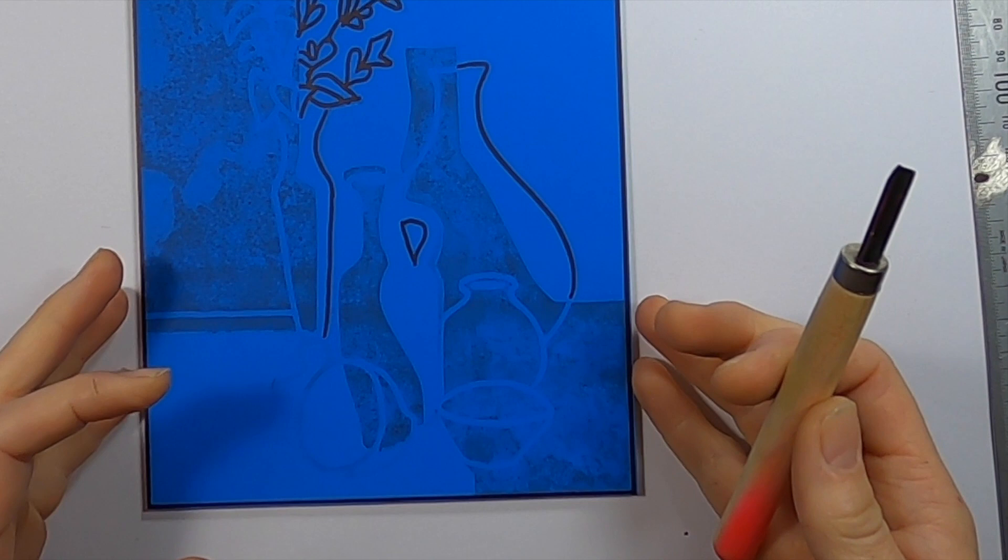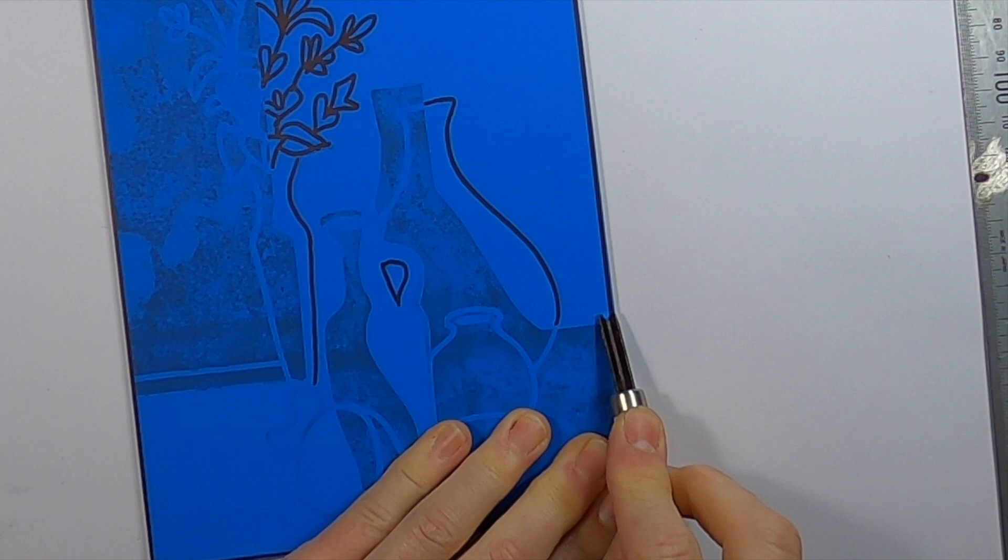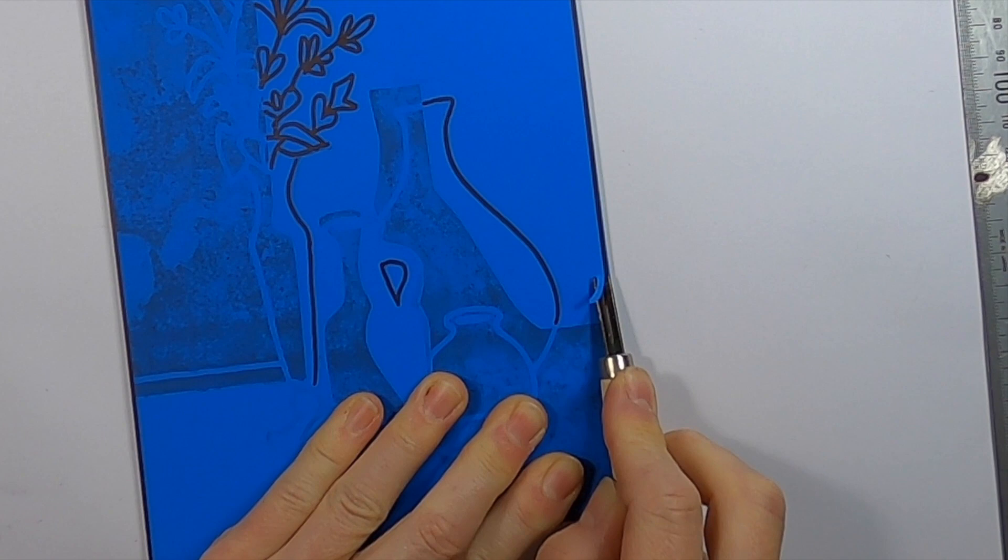As this will be a single color lino print, I'm basically going to cut out everything except the printed area, so in this case all the blue bits. Whatever I cut or anything I remove from the plate will be white.